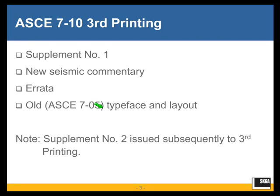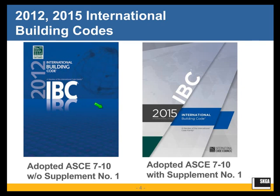ASCE also processed a Supplement Number Two to AC710, but that was done too late for inclusion in the third printing. Supplement Number Two consists only of a couple of items dealing with Chapter 15 requirements for non-building structures.